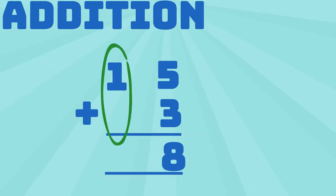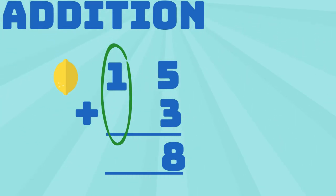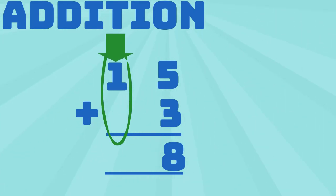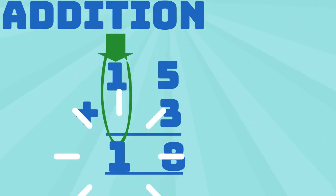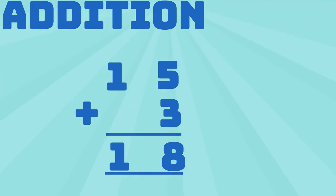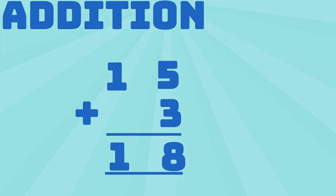1 lemon plus 0 equals 1. That means 1 plus 0 equals 1. Therefore, 15 plus 3 equals 18.